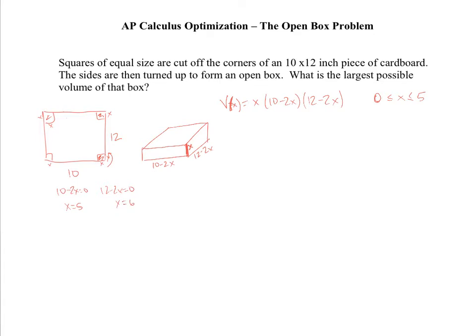Well, if I choose 6, that ends up on this end right here being 10 minus 12. Well, I can't have a dimension that's negative, so 6 doesn't work. But if I choose 5, I'll get a 0 here, and here I'll get 12 minus 10, which is 2. That's fine. I can choose that. So this is the largest possible value I can choose.